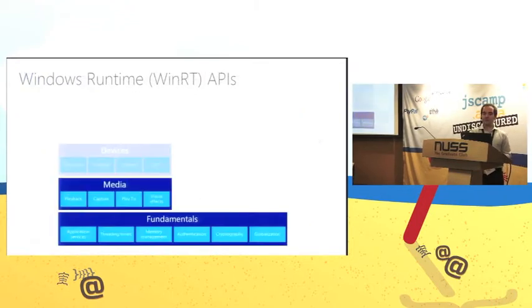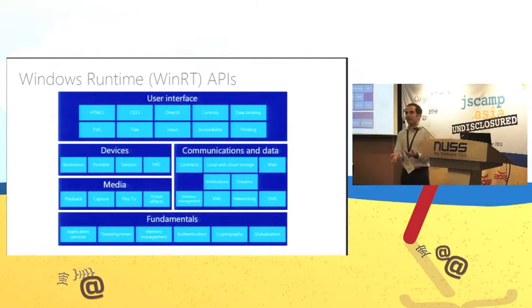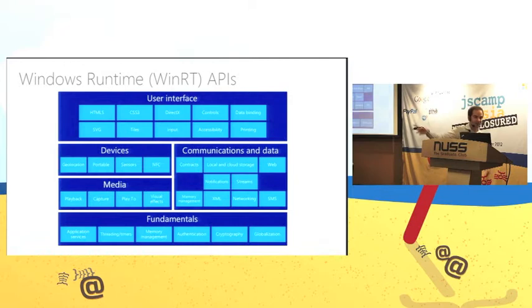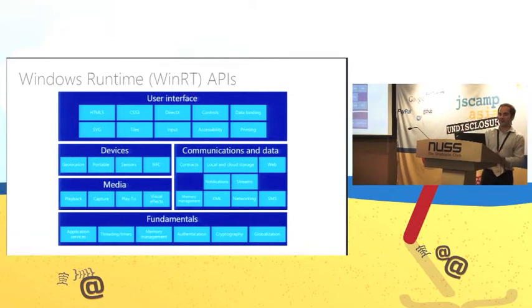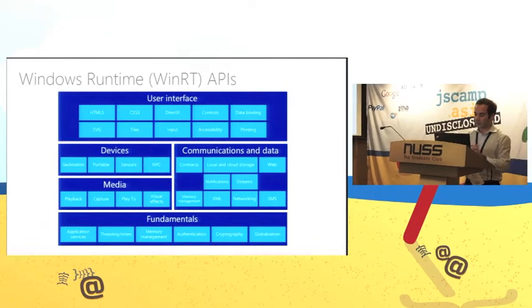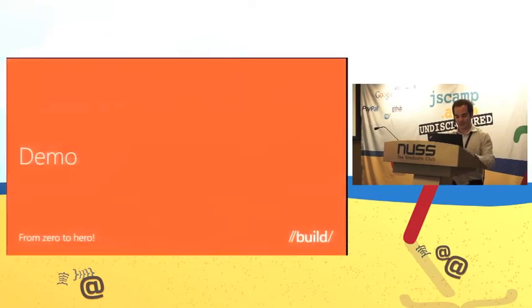In terms of the Windows Runtime, this is where Windows 8 comes in. This is an additional layer of APIs provided through JavaScript, and it allows you to connect to memory, cache, media, devices, sensors, and more advanced graphics. We'll use all of this together, but now let's write some code.